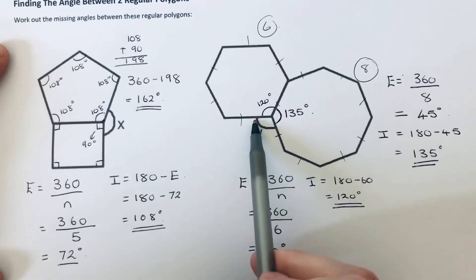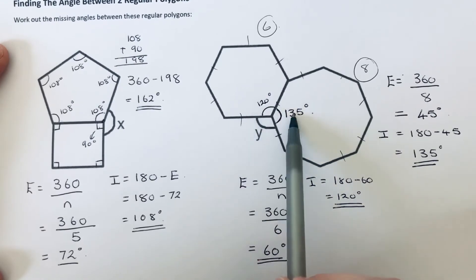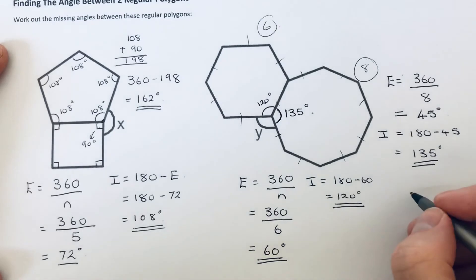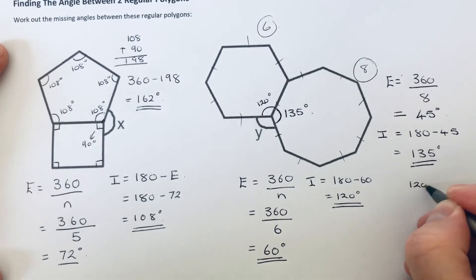So we can now use angles around this point or a circle to work out angle Y. So if you add these two angles up and take it away from 360.